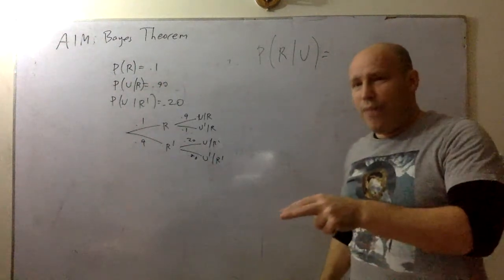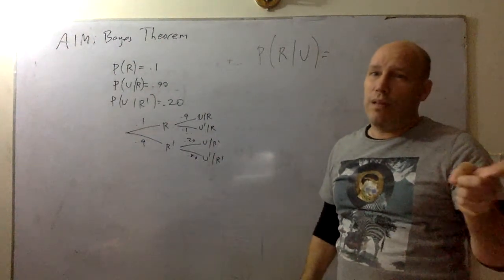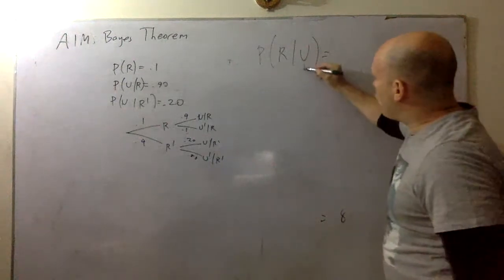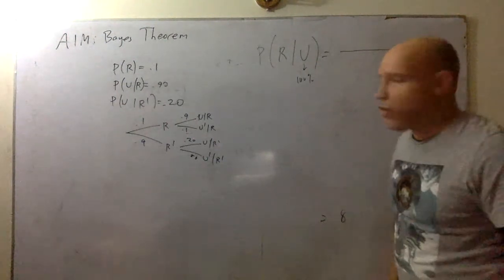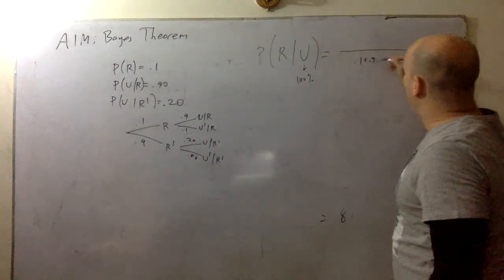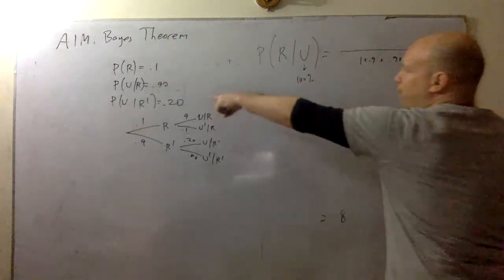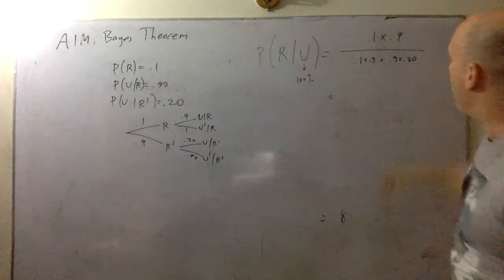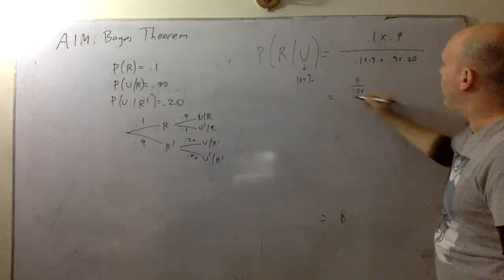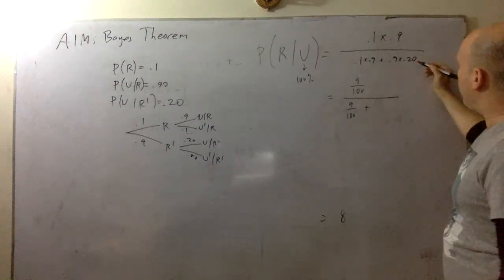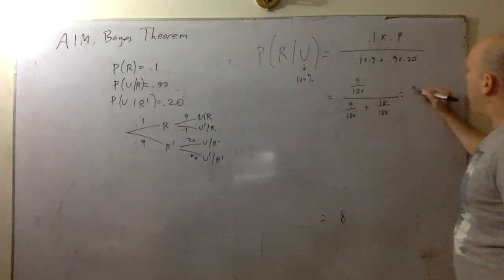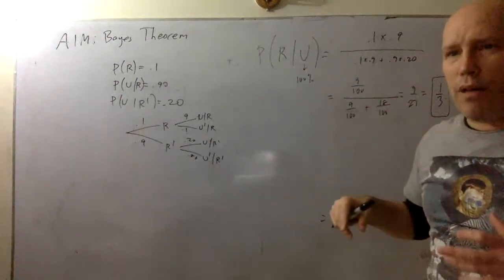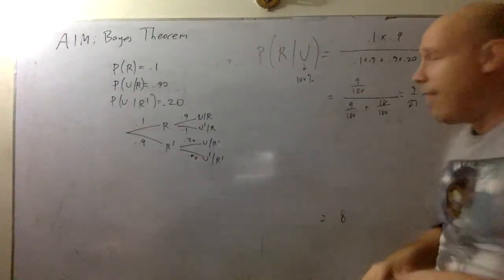Bayes wants to know: given you had an umbrella, what was the probability that it was raining? This is our new 100%. In our branches we have 0.1 times 0.9 plus 0.9 times 0.20, and we're interested in the first branch: 0.1 times 0.9, which is 9 over 100, divided by 9 over 100 plus 18 over 100, giving us 9 over 27 — a one-third chance. So given you had your umbrella, there's a 33% chance that it was raining. And that's Bayes.